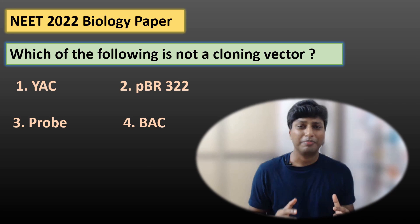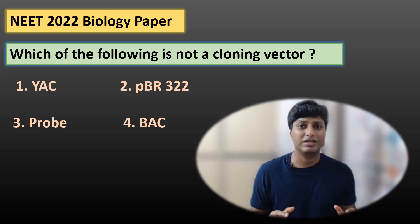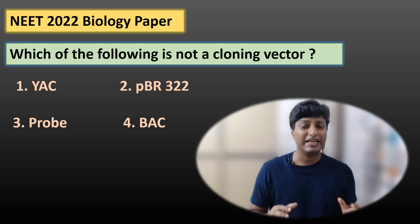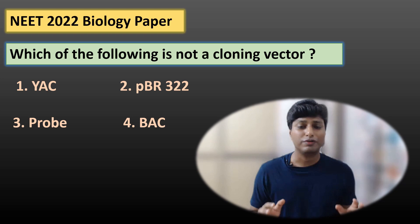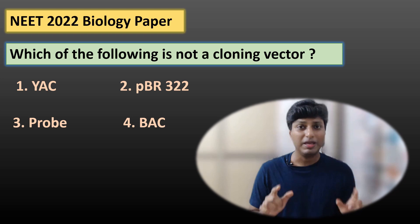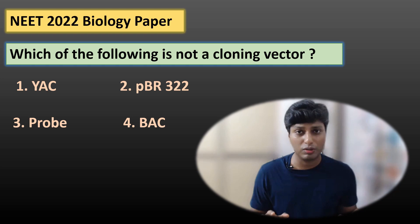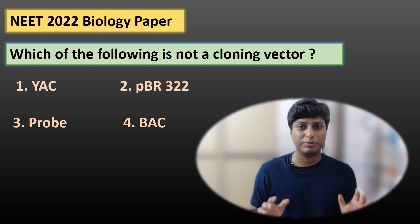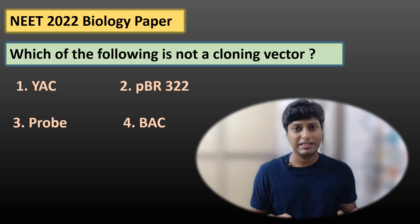Based on this concept, there was a question asked in NEET 2022 biology: which of the following is not a cloning vector? Be extremely careful as the question is asking which is NOT a cloning vector. The options were: YAC, PBR322, probe, and BAC.